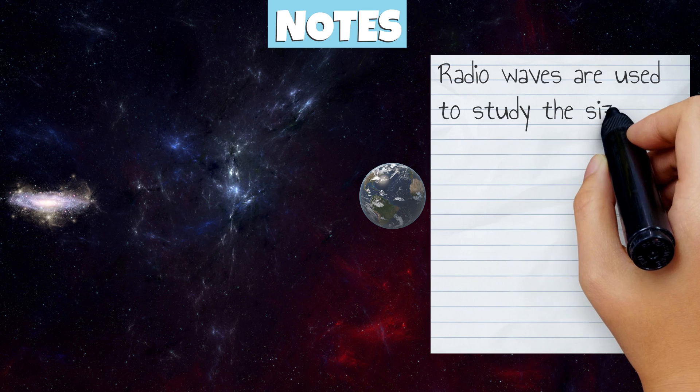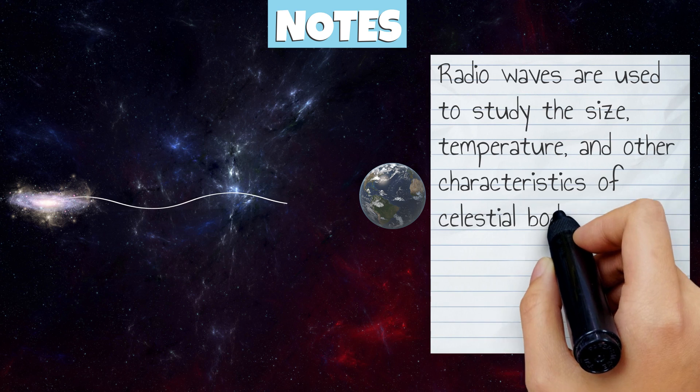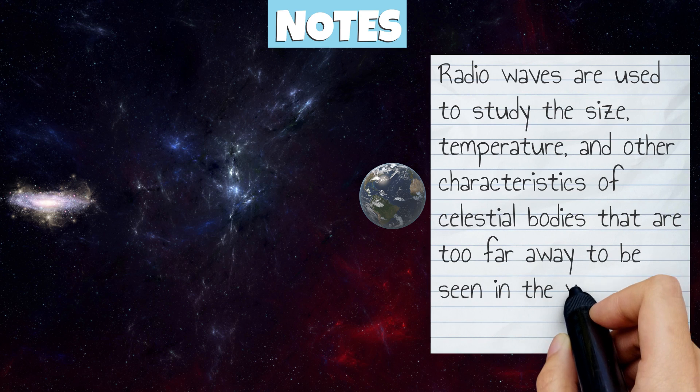Radio waves are used to study the size, temperature, and other characteristics of celestial bodies that are too far away to be seen in the visible light spectrum.